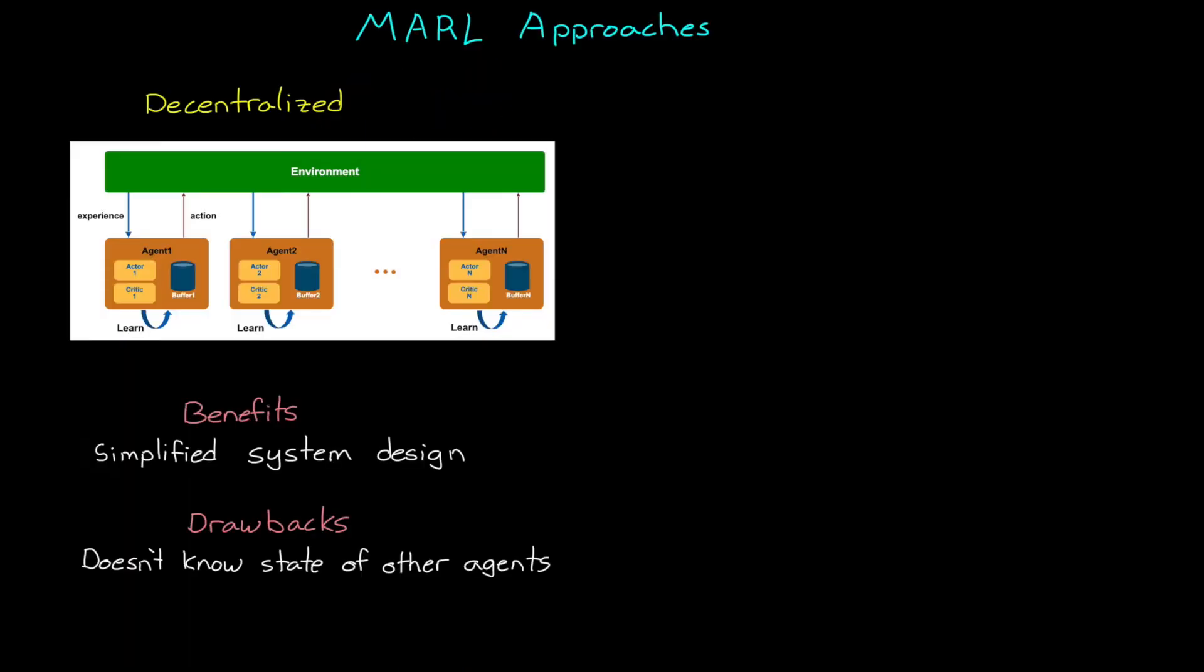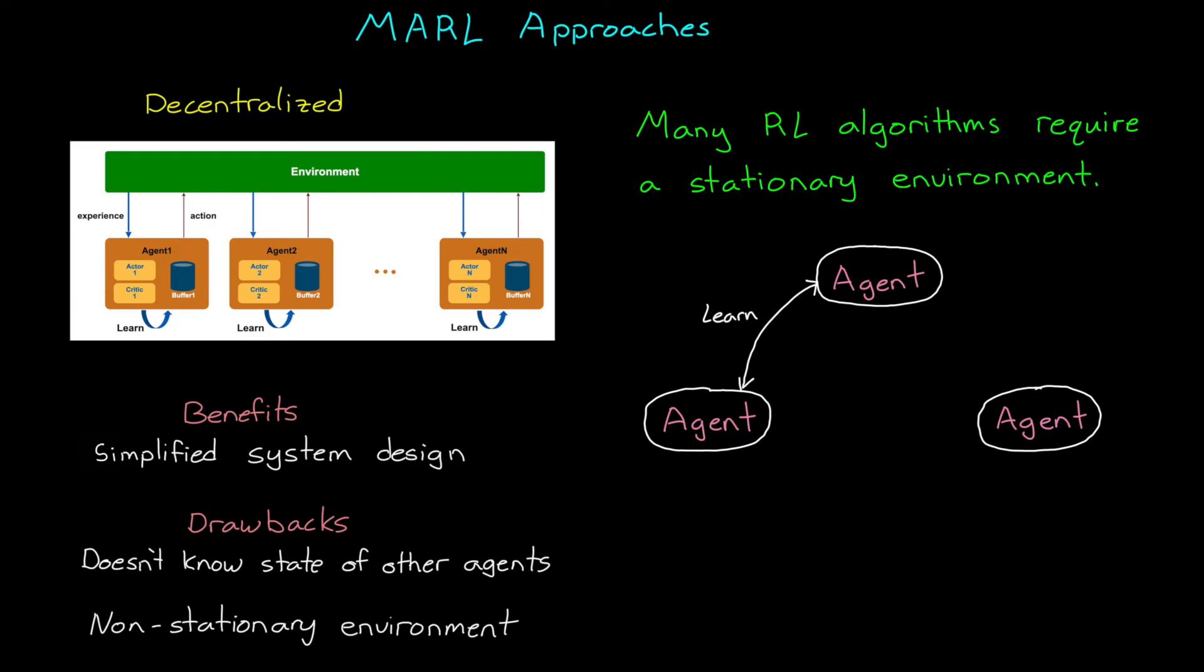However, it still might not be the best approach because we actually have another problem. When we have multiple agents, each that are learning and changing their policy, this makes the environment non-stationary, meaning that the underlying Markov decision process changes over time. And the reason that this is an issue is because many reinforcement learning algorithms expect the environment to be stationary. Otherwise, they're sort of chasing a moving target. In the case of multi-agent reinforcement learning, we end up with the situation where each agent is trying to learn what the other agents are doing. But at the same time, those other agents are also learning and changing. So, they're all kind of continuously reacting to each other's policy changes and they may never converge on a solution.